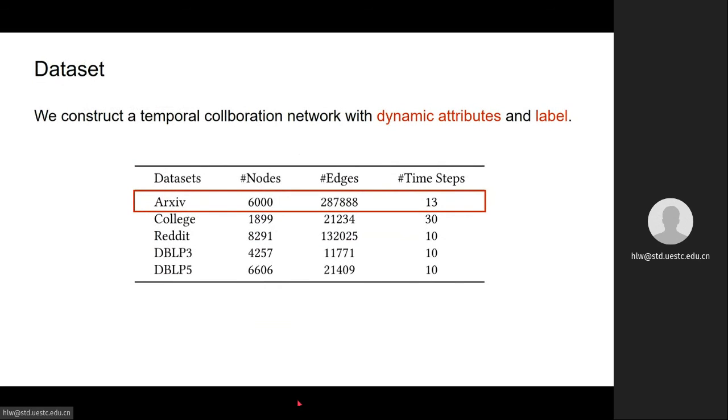Due to the lack of real-world dataset with temporal label, we construct a dataset archived from raw data. This data contains 6,000 nodes with 13 time steps, and you can find more details in our paper.